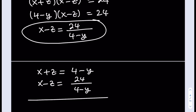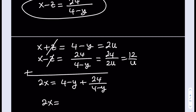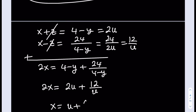Using elimination — just adding the two equations — z cancels and we get 2x equals 4 minus y plus 24 over 4 minus y. To keep things clean, let's call 4 minus y equal to 2u, so 24 over 4 minus y becomes 24 over 2u, which is 12 over u. The reason is that I want to add two even quantities so that dividing by 2 gives a nice result. After the replacements and dividing by 2, that gives x equals u plus 6 over u. This is an important result — x expressed in terms of u.